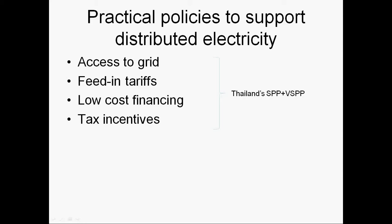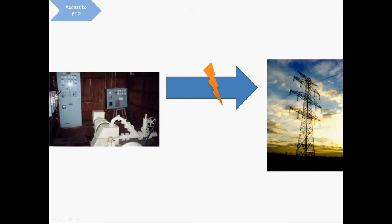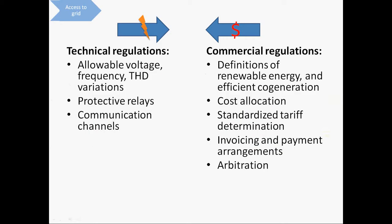Regarding access to the grid, regulations essentially have two components. First, a set of technical regulations that provide for a safe flow of electricity from the generators to the national grid, covering topics like allowable voltage, frequency regulations, and required protective relays. Second, a set of commercial regulations regarding flows of money to the small power producer generators, focusing on how costs are allocated, how tariff amounts are determined, and what happens in the event of disputes. A standardized power purchase agreement eliminates lengthy case-by-case negotiations with utilities.